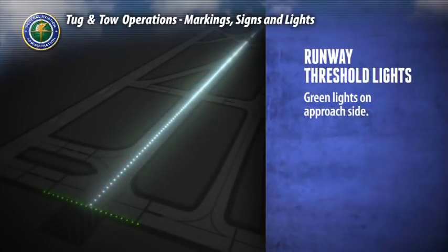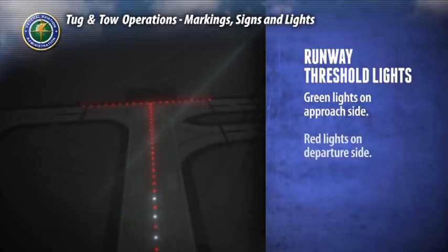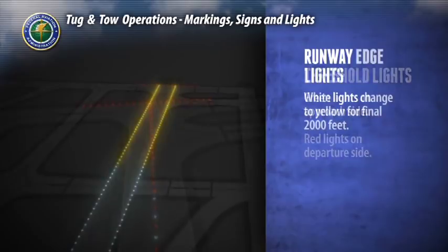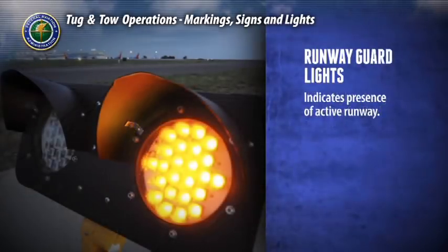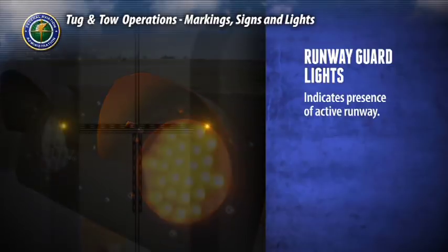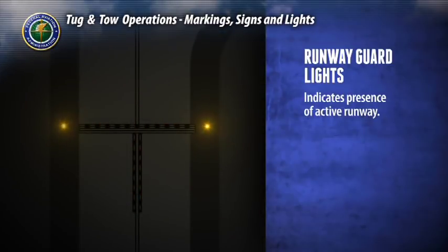Threshold lights are located on each end of the runway — green is used on the approach side and red is used on the departure side. Runway edge lights are white but will change to yellow for the last 2,000 feet. Flashing yellow runway guard lights are used to indicate the presence of an active runway ahead and are located on either side of the holding position marking.